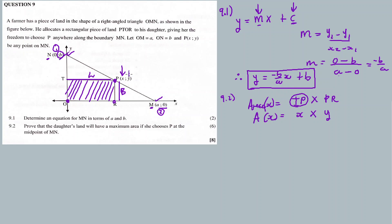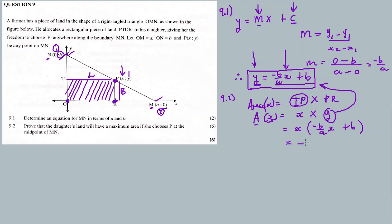The area = x × y, where y is the distance from R to P. But we have to represent the area in terms of x only. So x times: y equals what? y equals this straight line, so substitute — my y becomes (-B/A)x + B. So area = x[(-B/A)x + B].